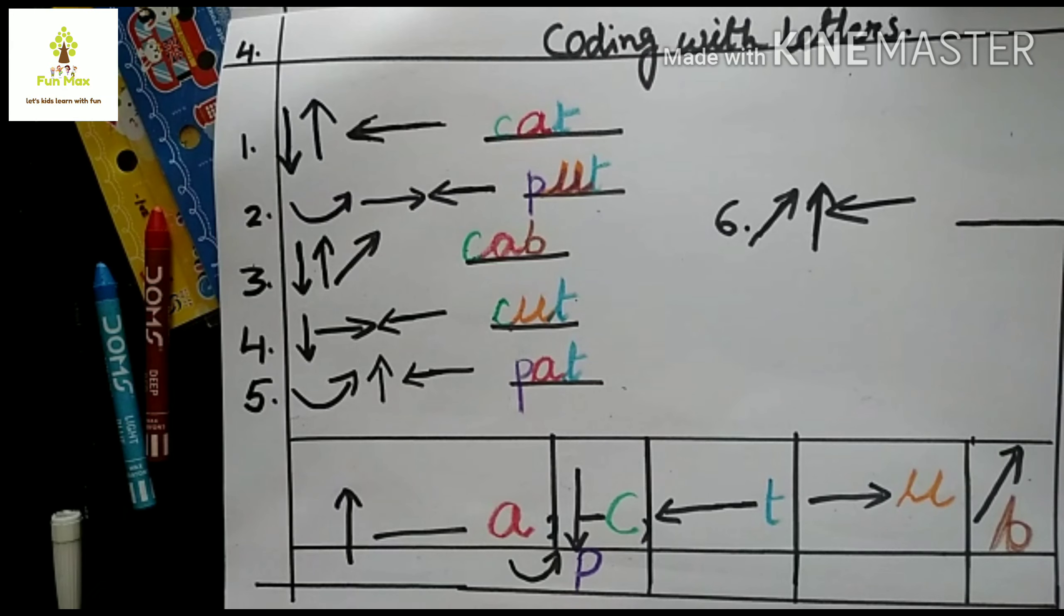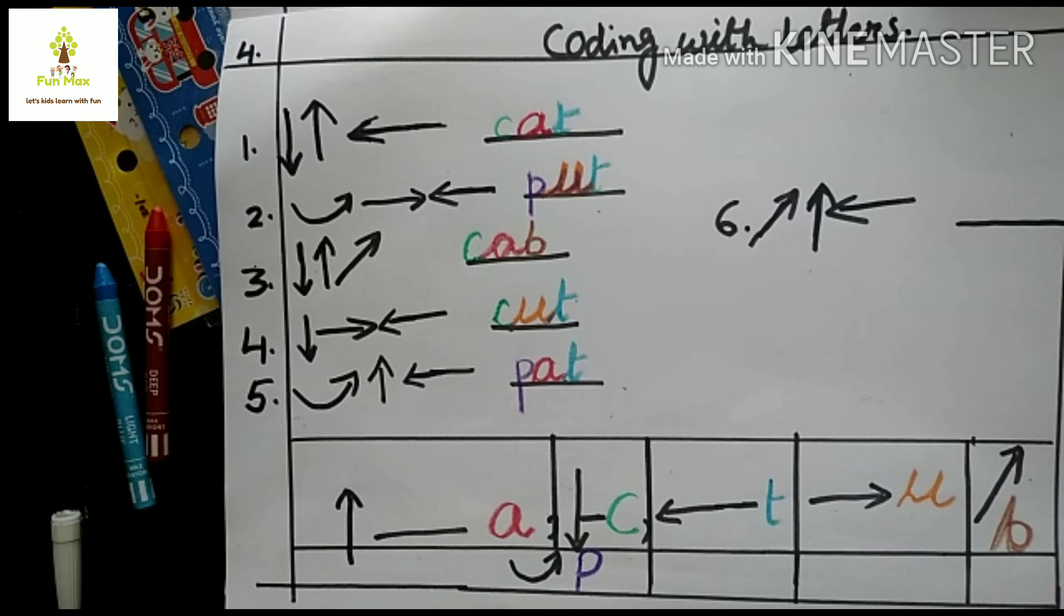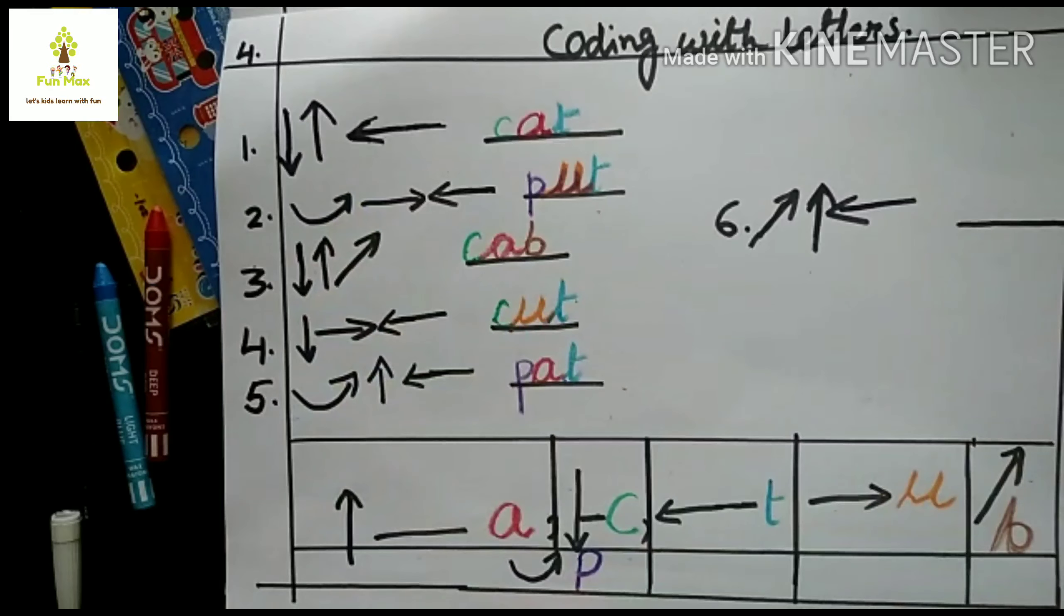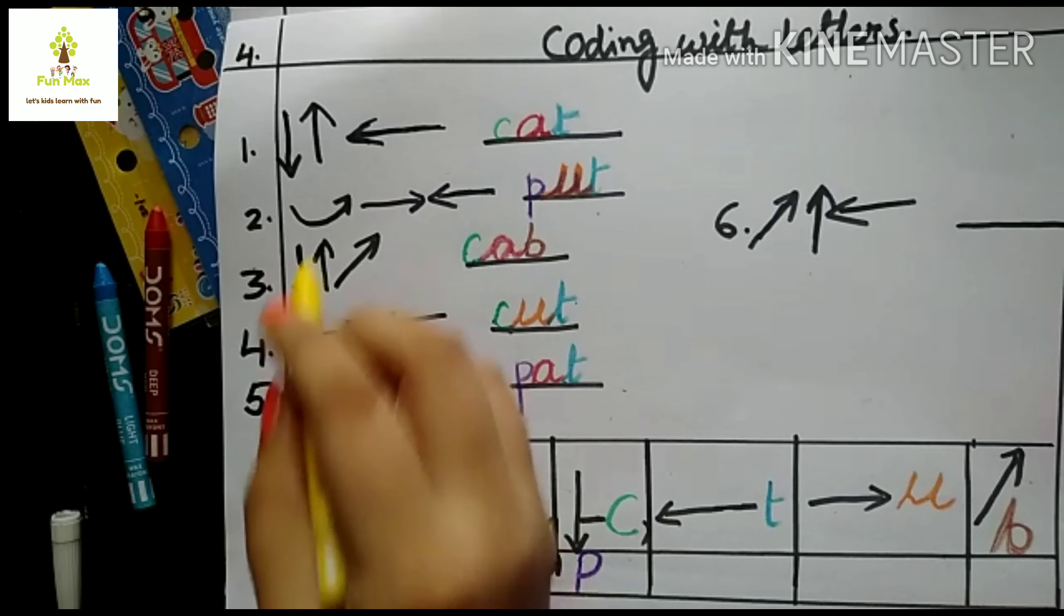Parents must be known that coding is not rocket science. It is a set of instructions. How do kids follow the instructions from their childhood, from their beginning period. Follow the set of instructions. According to that, child has to perform on that. Gradually, they can reach the goal and perform their activities.